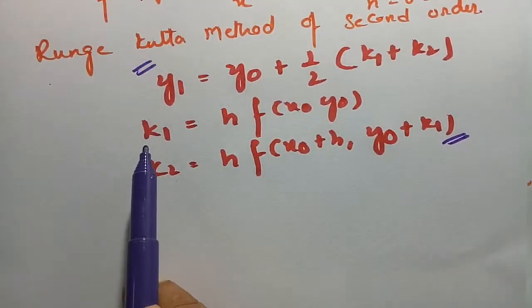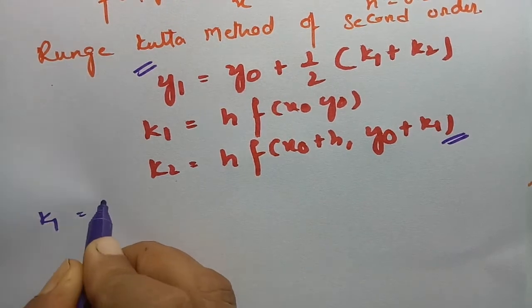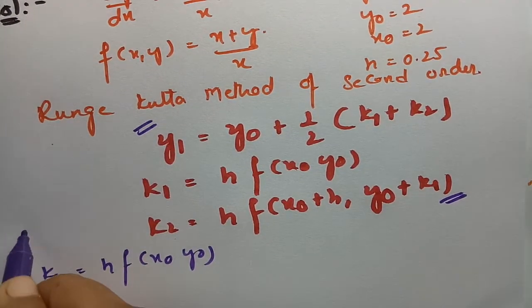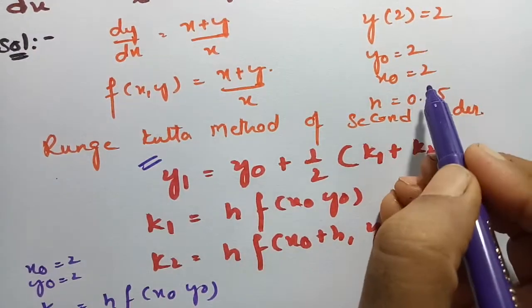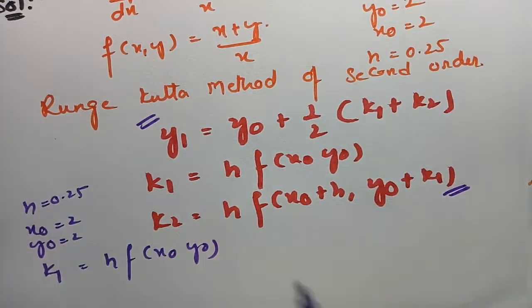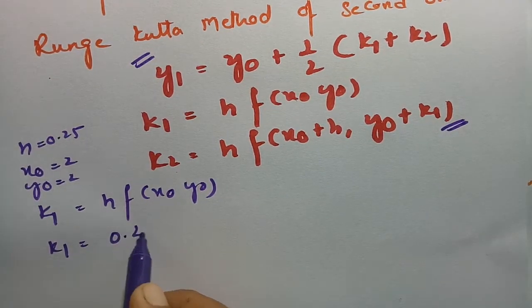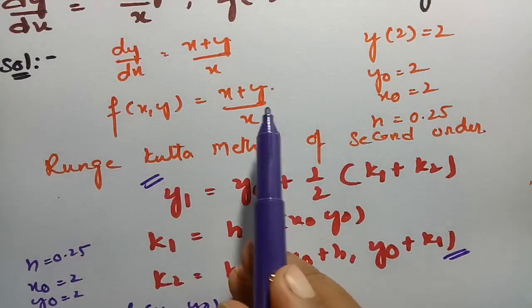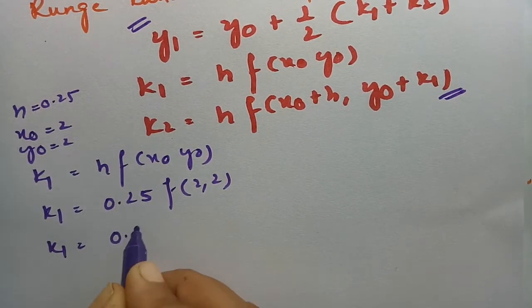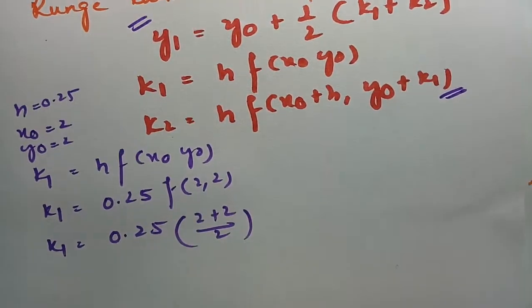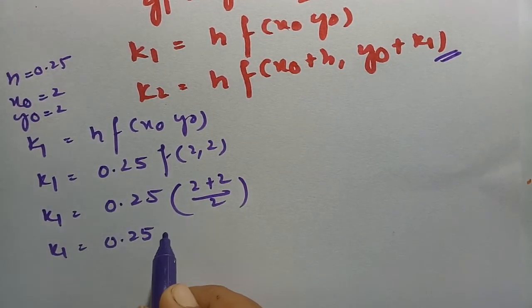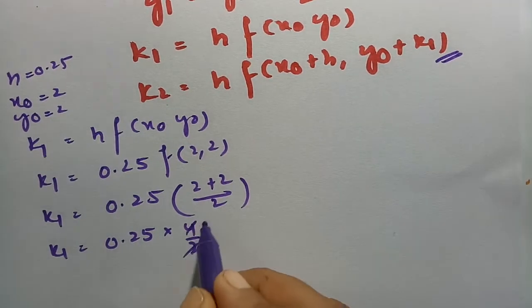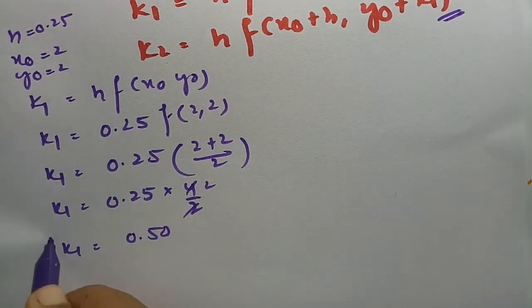First we have to find k₁ and k₂. So k₁ = h · f(x₀, y₀). All values are ready: x₀ = 2, y₀ = 2, h = 0.25. Applying the function f(x, y) = x + y/x, we get k₁ = 0.25 × (2 + 2/2) = 0.25 × (2 + 1) = 0.25 × 4/2 = 0.25 × 2 = 0.50. So k₁ = 0.50.